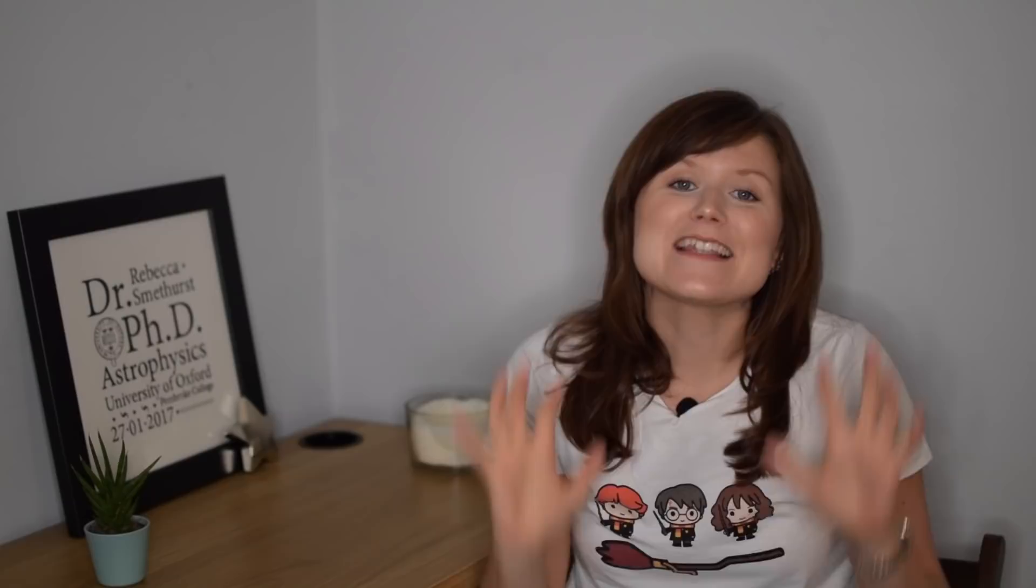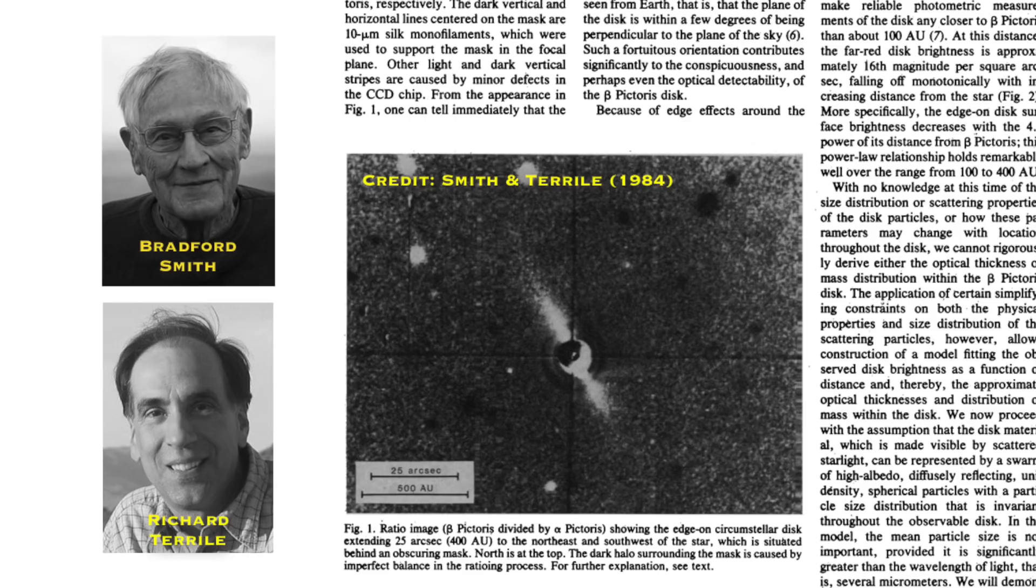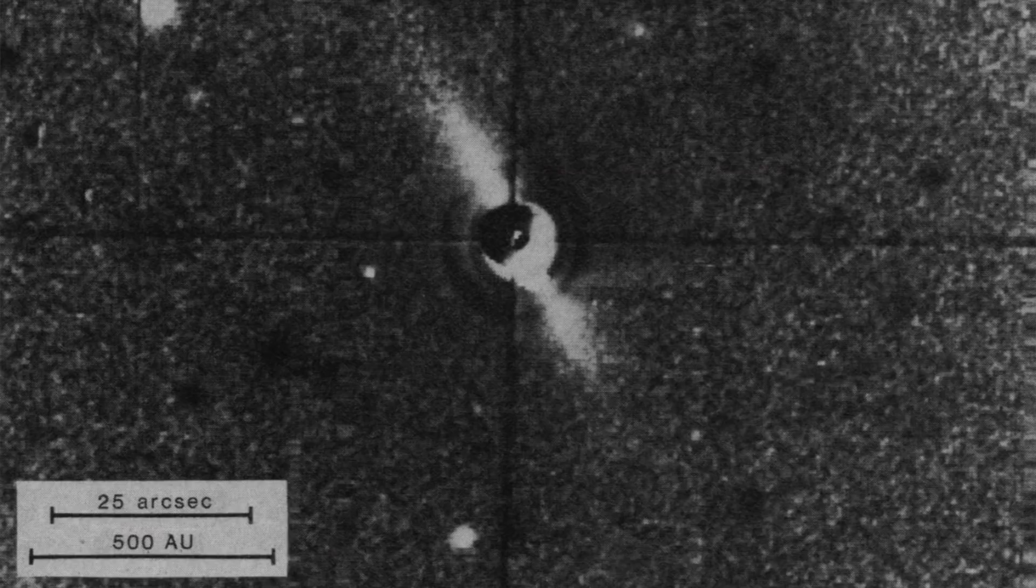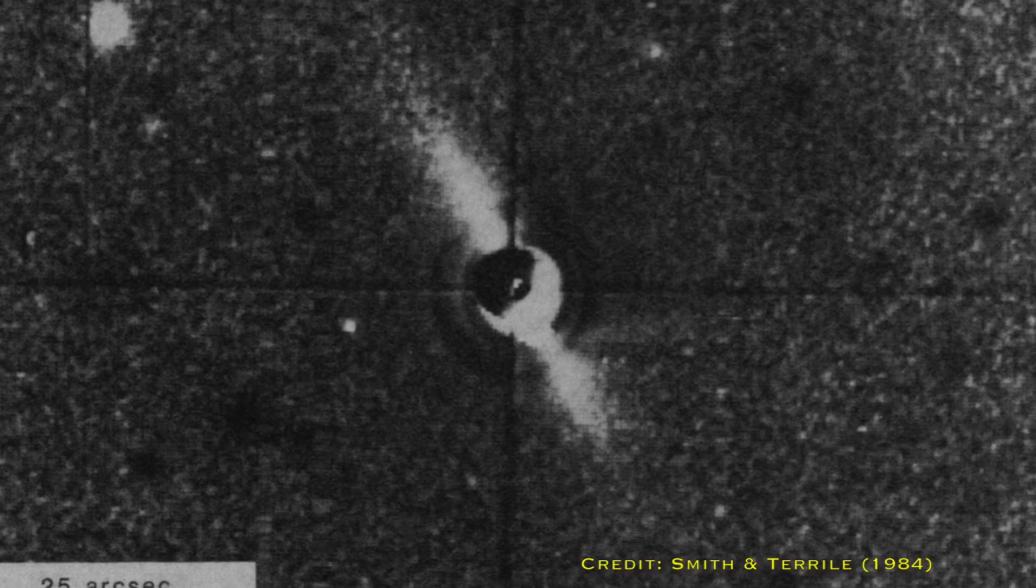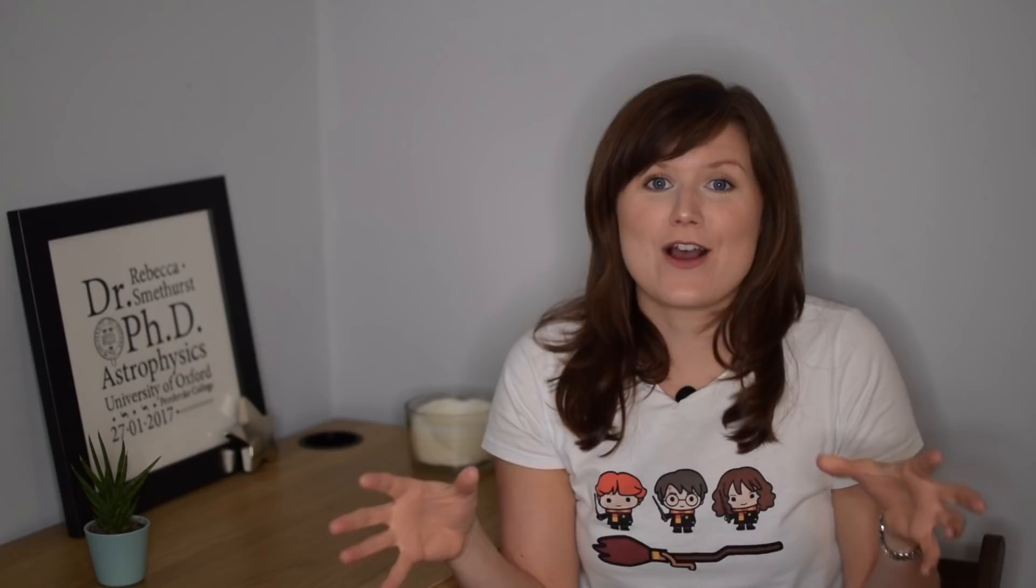By the 1980s, telescopes had improved leaps and bounds, so much so that Bradford Smith and Richard Turiel actually managed to image material around the star Beta Pictoris. What they'd imaged was a dusty disk surrounding the star, which from planetary formation models was expected if you were forming brand new planets around that star. It was the first time any material around a star had been detected in visible light and it really spurred people on again to actually try and find the first fully formed planet around a star.